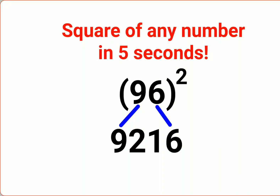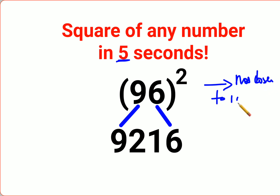Welcome everyone. Today I'm going to show you a method with which you will be able to find squares of any number literally in seconds — under five seconds. There are two methods: one specific to numbers closer to 100, and another which is universal, applicable for all two-digit numbers.